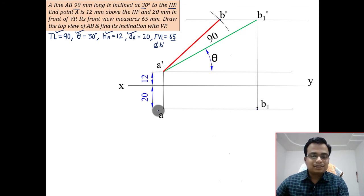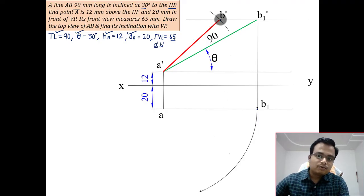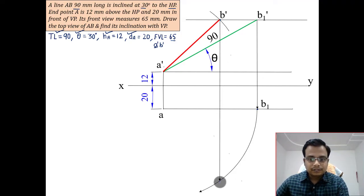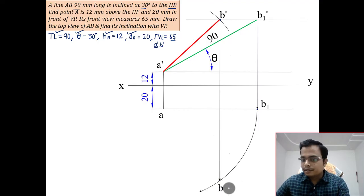Now with a as center and ab1 as a radius, let me rotate this in the clockwise direction. That's it. And now drop a line from b dash that will intersect this arc somewhere here. This here, just like a dash has a, b dash will be having b. That's all. That's the final top view.